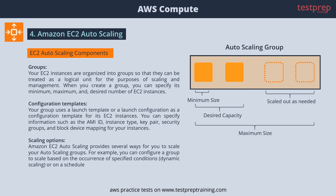Two: Configuration Templates. Your group uses a launch template or a launch configuration as a configuration template for its EC2 instances. You can specify information such as the AMI ID, instance type, key pair, security groups, and block device mapping for your instances.